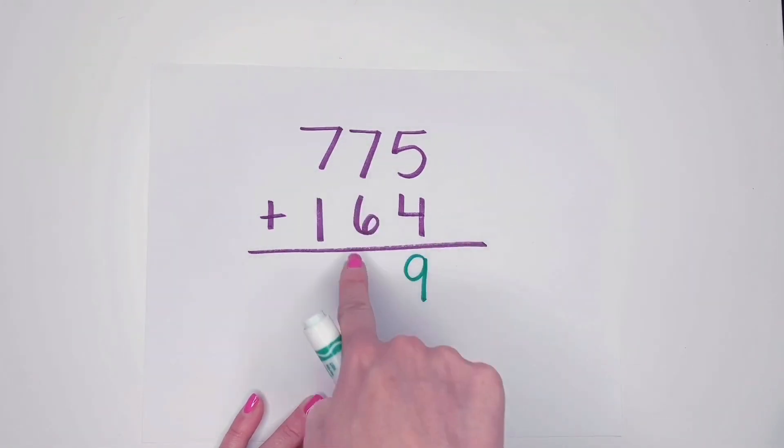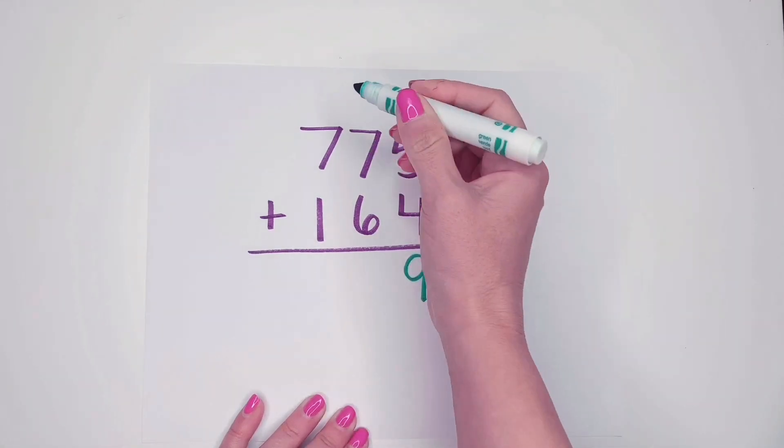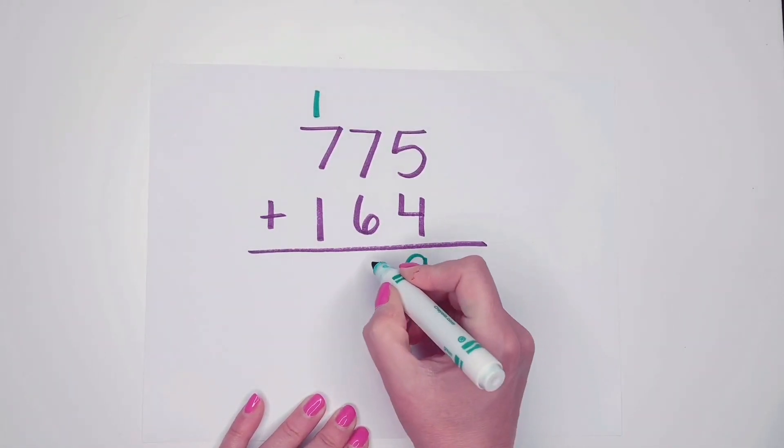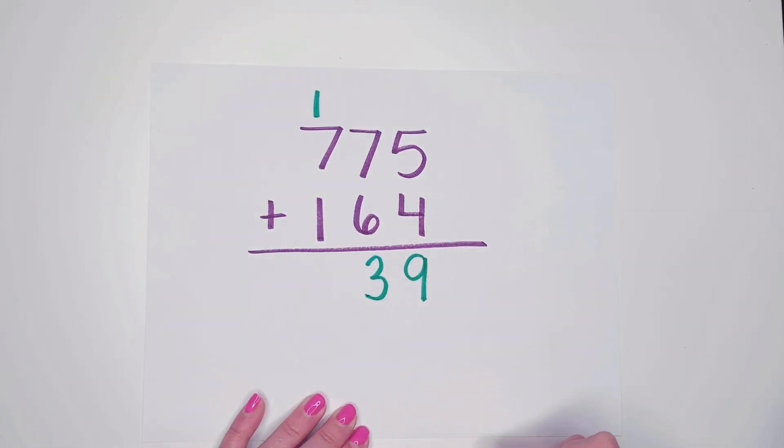Now I can't put thirteen tens in my tens place. I have to give ten tens to the hundreds place. And now I can put my three tens down here.